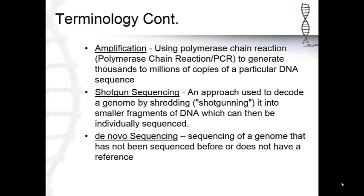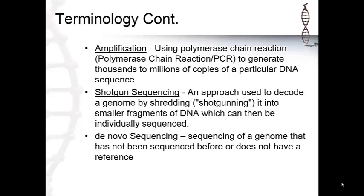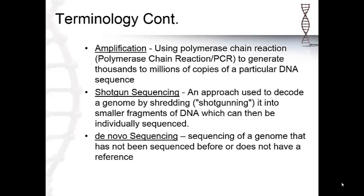Amplification consists of using polymerase chain reaction, or PCR, or bridge amplification, to generate thousands to millions of copies of a particular DNA sequence. Shotgun sequencing is an approach used to decode a genome by shredding, or shotgunning, into smaller fragments of DNA, which can then be individually sequenced.